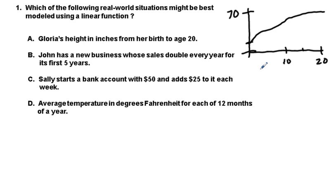This next one, B, you have John, whose business doubles every five years. So here's business, and then next year is going to double. Next year is going to double that. So John's business is going up like this, not a linear situation.